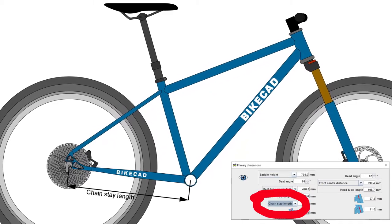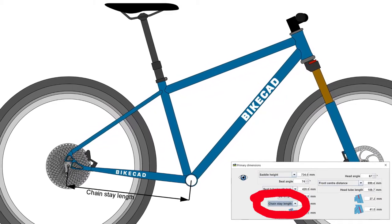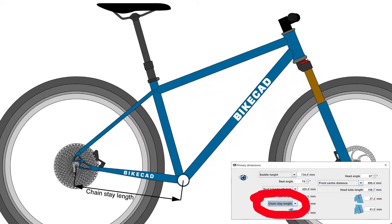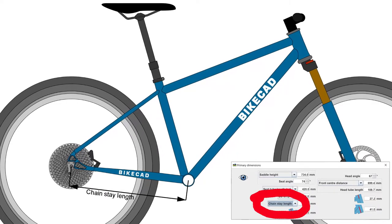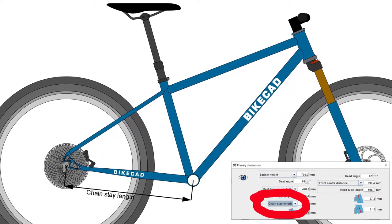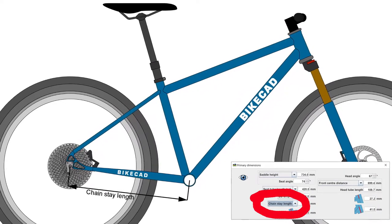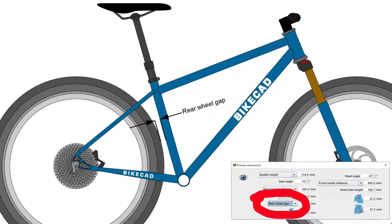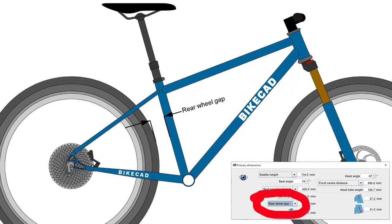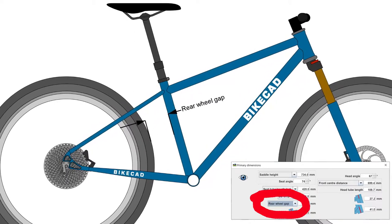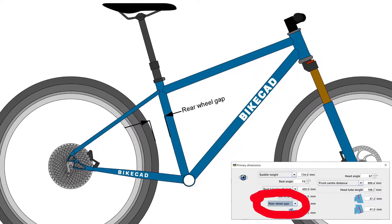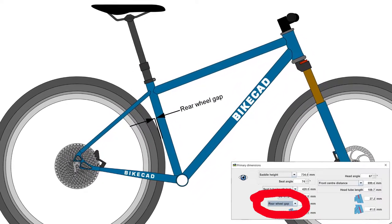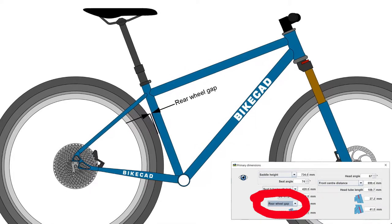While BiCAD does give you the option to directly input chainstay length, for some the concern isn't so much exactly how long the chainstays are, but rather how much of a gap there is between the rear wheel and the seat tube. For that, we have the option to control the rear end by rear wheel gap.